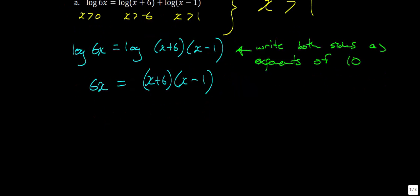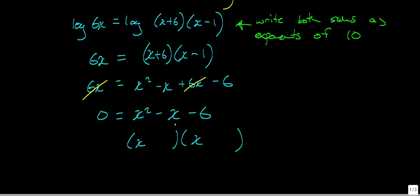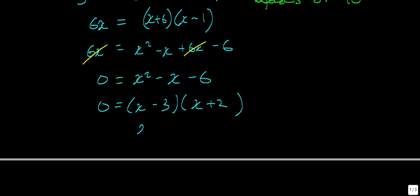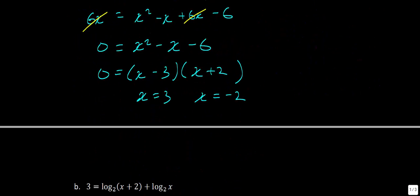Using the distributive property: x times x is x², x times negative 1 is −x, then plus 6x, minus 6. The 6x on both sides cancels, leaving x² − x − 6 equals 0. Factoring: numbers that multiply to −6 with a sum of −1 are −3 and +2. Setting each factor equal to zero gives x equals 3 and x equals −2. Since x must be greater than 1, we reject x equals −2. Our answer is x equals 3.